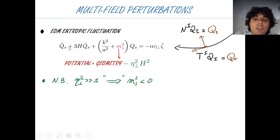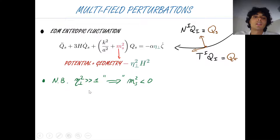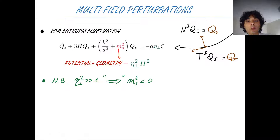Looking at the equation for the entropic fluctuation, you see source terms from the curvature fluctuation and an entropic mass with three contributions: one from the potential, one from the geometry, and a negative one proportional to the bending parameter eta_perp. One can infer schematically that if the bending is much bigger than one — strongly non-geodesic motion — this mass squared will become negative, giving a tachyonic instability on sub-horizon scales.